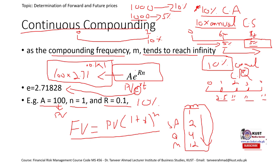Once we get this idea of continuous compounding — and this is important because we are going to use it in our forward pricing concepts throughout this whole lecture — we are going to use e and the continuous compounding concept. From here on, whenever we estimate the price of a forward or future contract or an option, we are going to use continuous compounding instead of compounding for different frequencies.